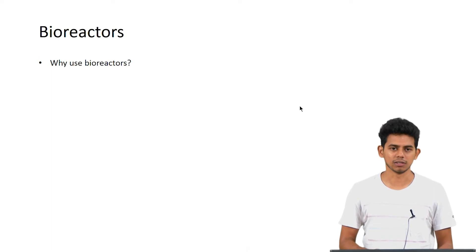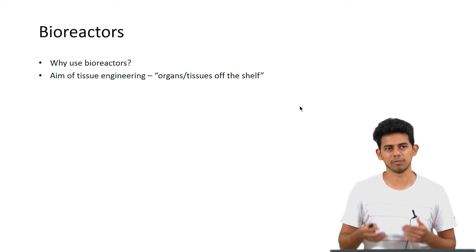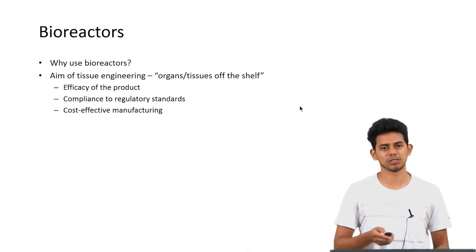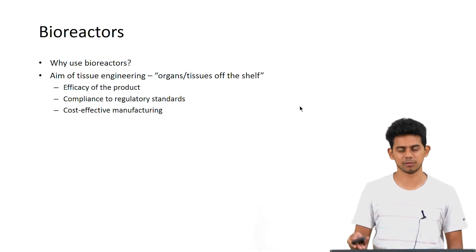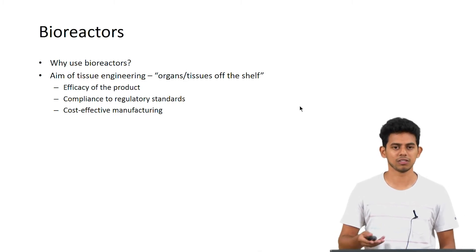Why use bioreactors? The aim of tissue engineering has been to get organs or tissues off the shelf wherein you are able to replace a tissue or organ which is damaged as easy as you buy a prosthetic. The factors which play an important role to making this feasible is the efficacy of the product. The product has to do what the natural tissue or organ does.